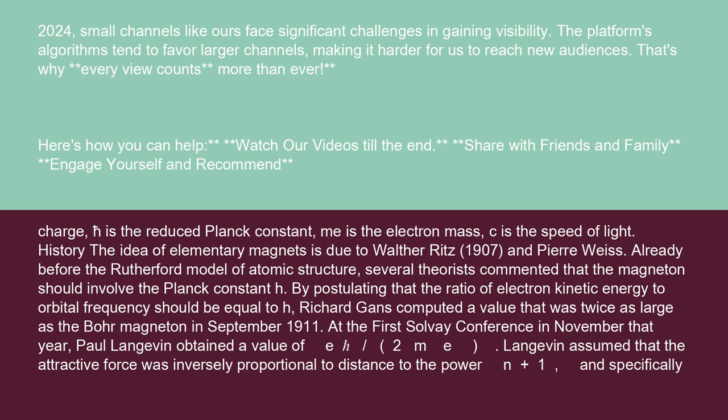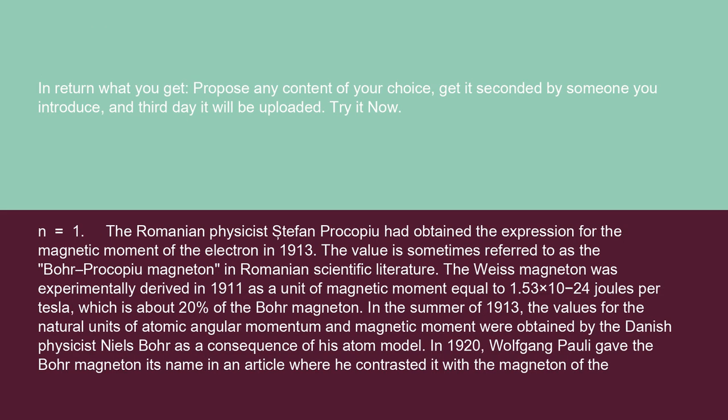At the first Solvay conference in November that year, Paul Langevin obtained a value of E/2me. Langevin assumed that the attractive force was inversely proportional to distance to the power n plus 1, and specifically n equals 1. The Romanian physicist Stefan Prokopiou had obtained the expression for the magnetic moment of the electron in 1913. The value is sometimes referred to as the Bohr–Prokopiou magneton in Romanian scientific literature. The Weiss magneton was experimentally derived in 1911 as a unit of magnetic moment equal to 1.53 times 10 to the minus 24 Joules per Tesla, which is about 20% of the Bohr magneton.